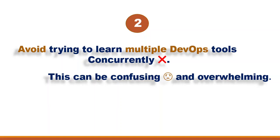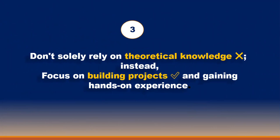Please avoid trying to learn multiple DevOps tools concurrently — this can be confusing and overwhelming. When I started learning DevOps, I would learn Git one day, Terraform the next, then Docker. Within the first month it was a disaster because I didn't really know what I was doing. I had to go to my mentor for guidance. Please avoid learning multiple tools at the same time. Learn them one after the other — when you're comfortable with Terraform, move to Ansible; when done with Ansible, move to Kubernetes.